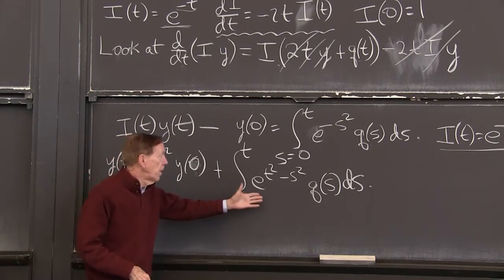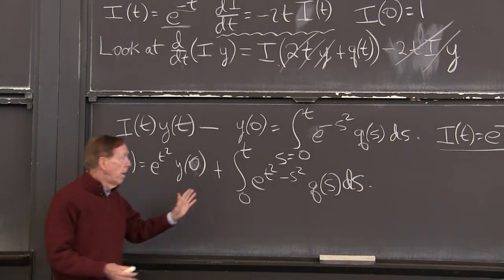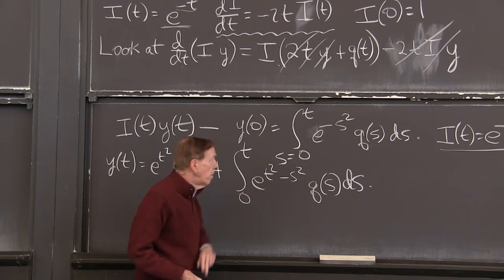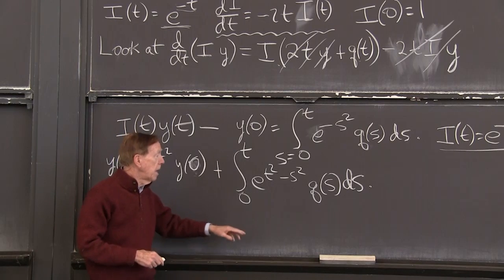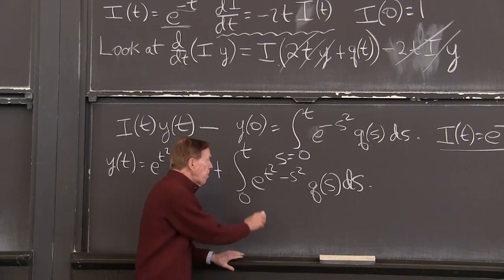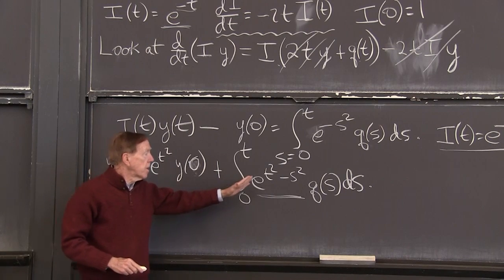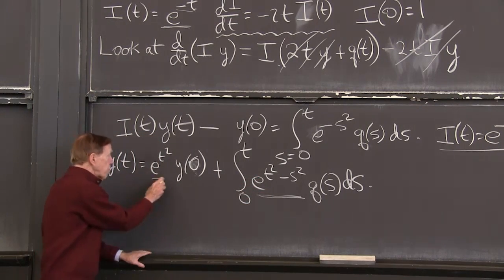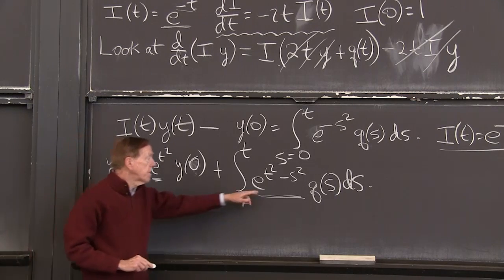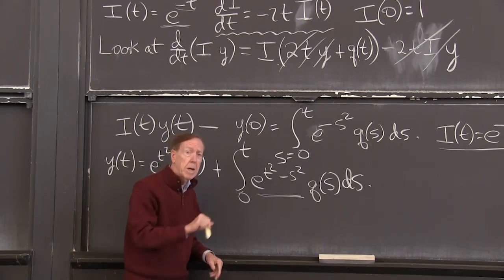And over here, I'm seeing the result, the output, from the input q, from all the inputs between 0 and t. Each input is multiplied by now that factor is the growth not from 0 to t. This is the growth from 0 to t. This is the growth from s to t.